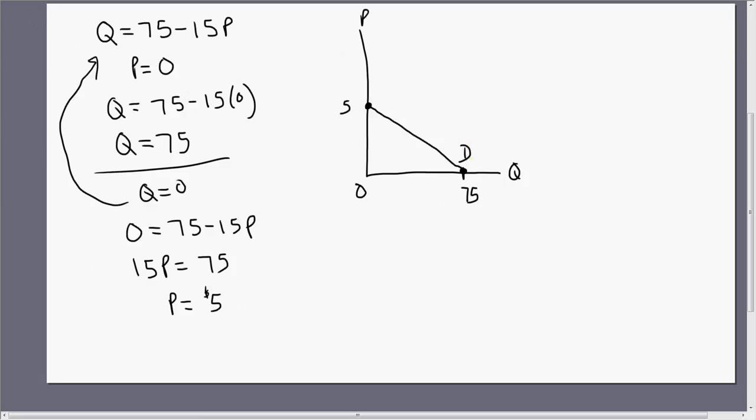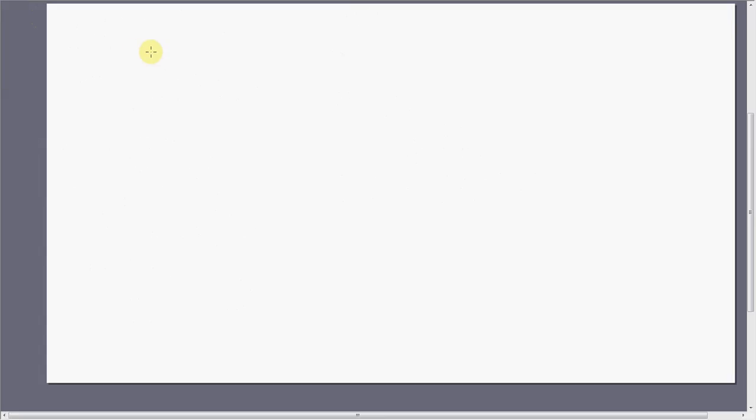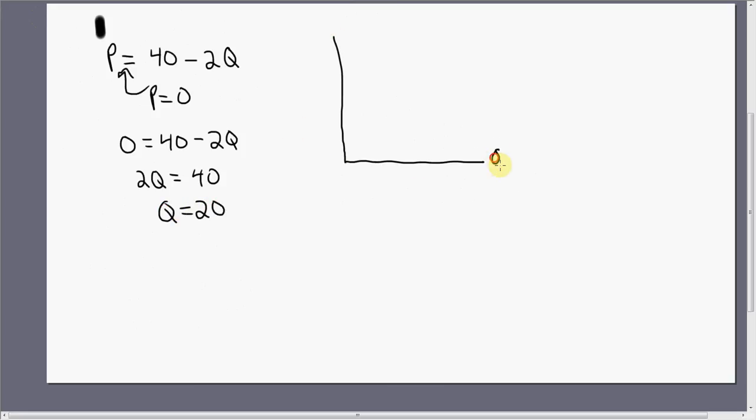One final example. Let's say you're given an inverse demand equation where P equals 40 minus 2Q. Still the same idea. Let's first find where P equals 0. Plugging 0 in for P, solving for Q, Q equals 20. There's really nothing more inherently difficult about graphing inverse demand equations. It's still the same setup. Here's where Q is 20 and P is 0.